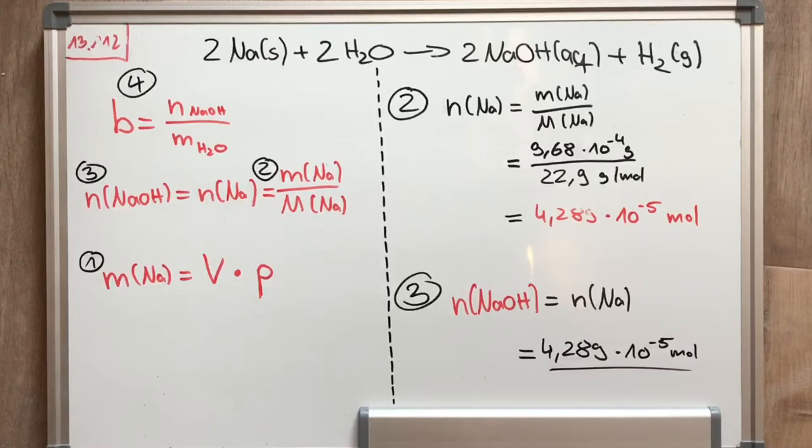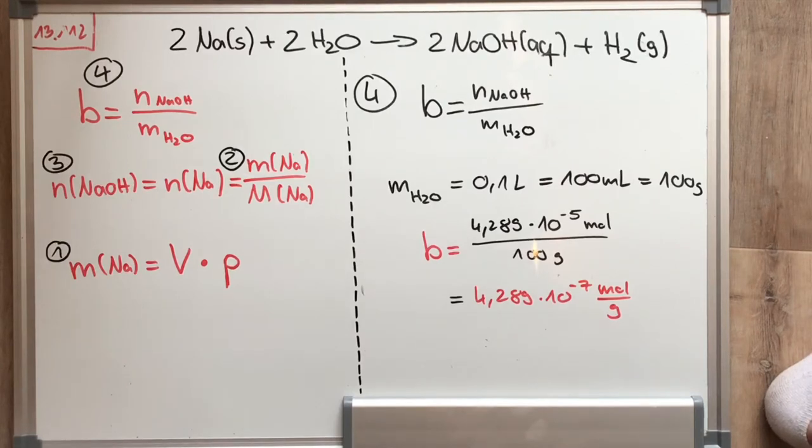If you have a look at the reaction equation, you can see that the molar amount of caustic soda is equal to the molar amount of sodium. So now we got every parameter to calculate the molality in our formula.